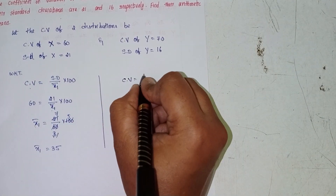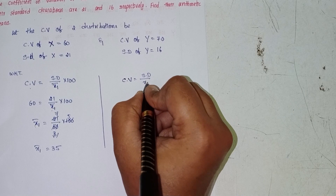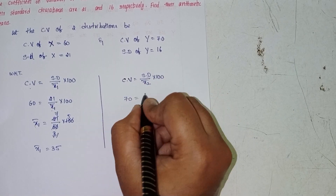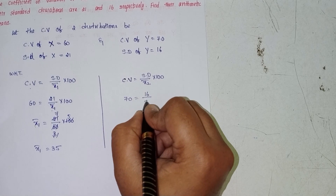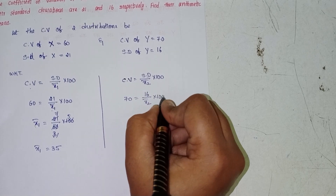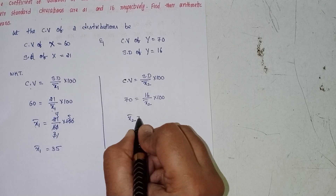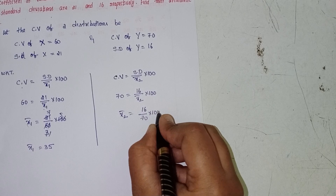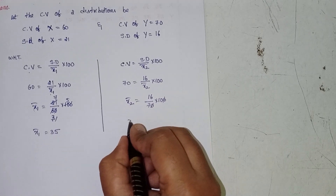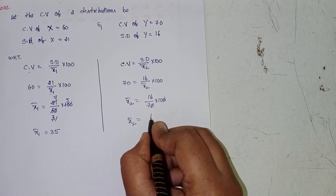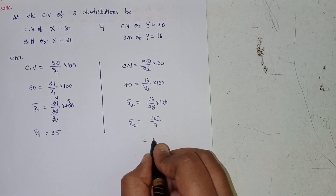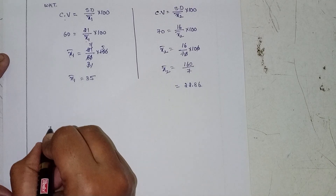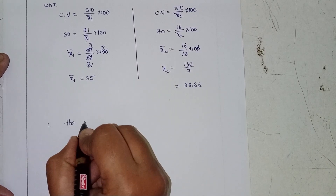Next, CV of y equals SD divided by x̄₂ into 100. So x̄₂ equals 16 divided by 70 into 100. The zeros cancel, giving x̄₂ bar equals 160 by 7, which equals 22.86.